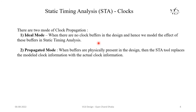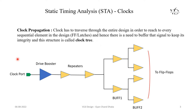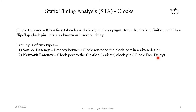In the previous slides, this is the clock definition point. When the clock signal travels from here to the clock pin of a particular flip-flop — and here there are lots of flip-flops sitting — the delay between this clock definition point to the flip-flop clock pin is called clock latency. There are two types of clock latency: one is source latency and one is network latency.